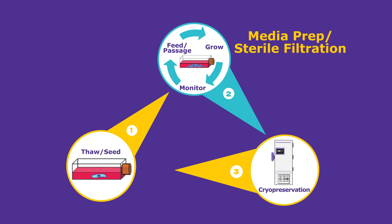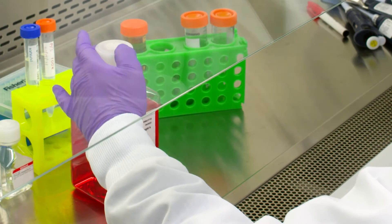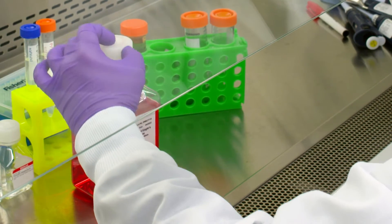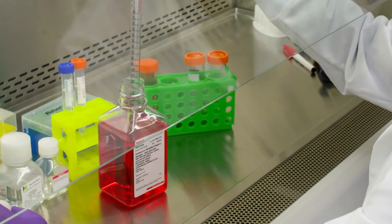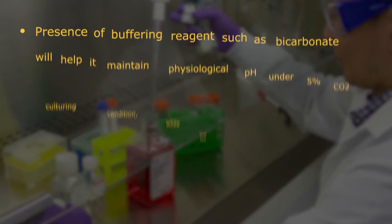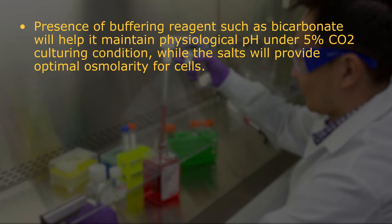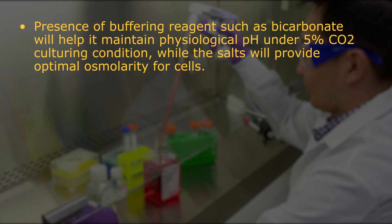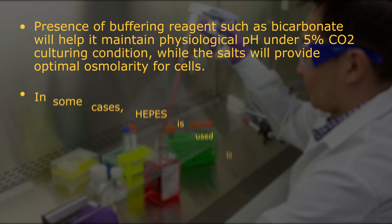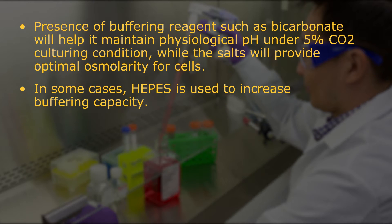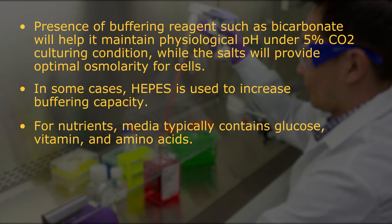Let's start with some basic information on the role of media itself. Simply put, media is a buffered salt solution supplemented with nutrients. Presence of a buffering reagent such as bicarbonate will help it maintain physiological pH under 5% CO2 culturing conditions, while the salt will provide optimal osmolality for cells. In some cases, HEPES is also used to increase buffering capacity. For nutrients, media typically contains glucose, vitamins, and amino acids.